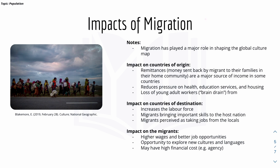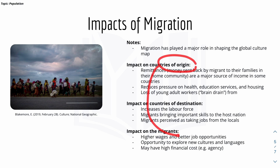Here are some impacts of migration on the countries of origin. Remittance — money sent back by migrants to their families in their home community — is a major source of income in some countries. This reduces pressure on health, education, and housing in the country of origin. However, as young adult workers move away, this causes brain drain, since those workers could have been contributing to that country.